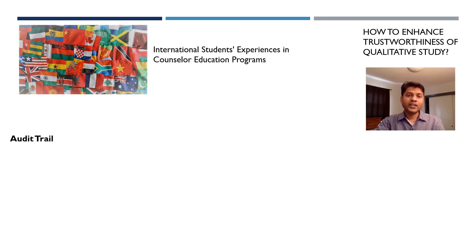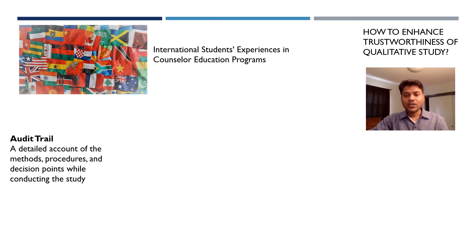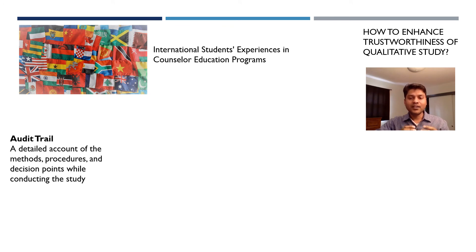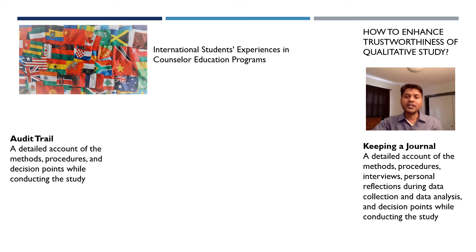Another important way of enhancing trustworthiness of a qualitative study is through an audit trail. An audit trail refers to a detailed account of methods, procedures, and decision points while conducting the study. To keep a detailed account of major decision points — such as why you chose a particular method of data collection — most researchers keep a journal. Keeping a journal is one of the most effective ways of minimizing your own personal biases and improving the trustworthiness of a qualitative study. You start keeping this journal from the very beginning of the qualitative research process.